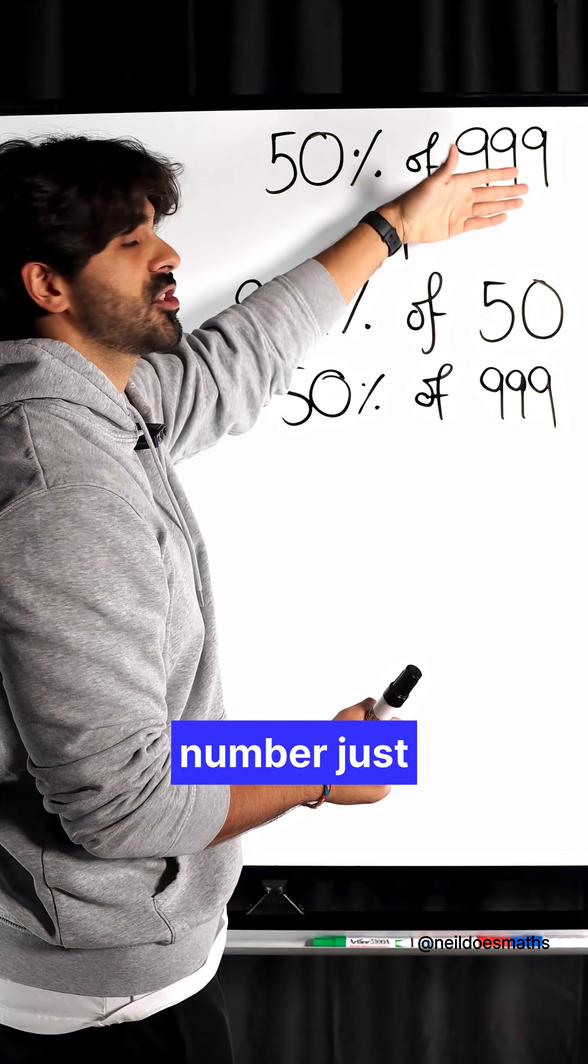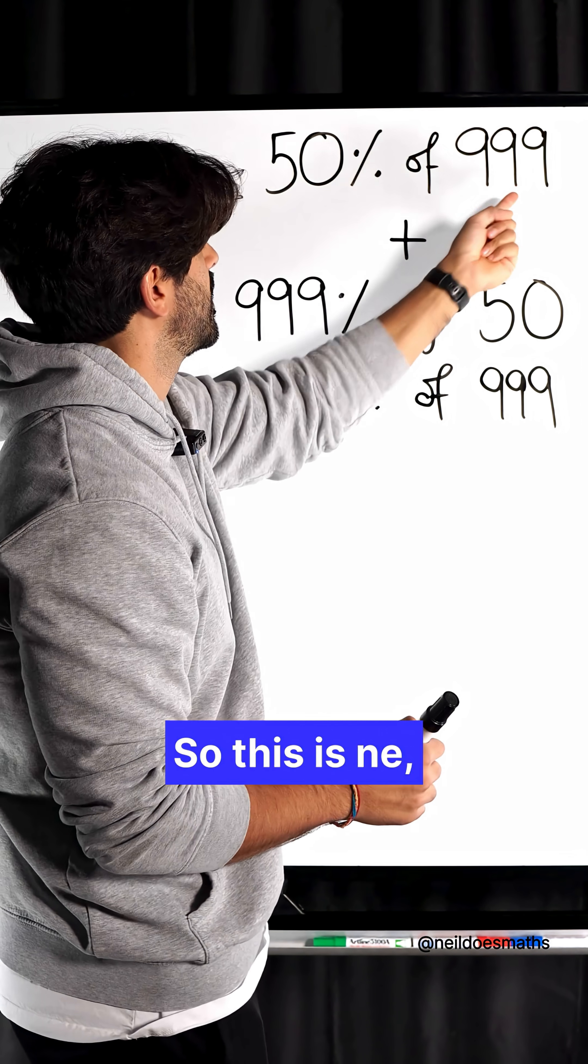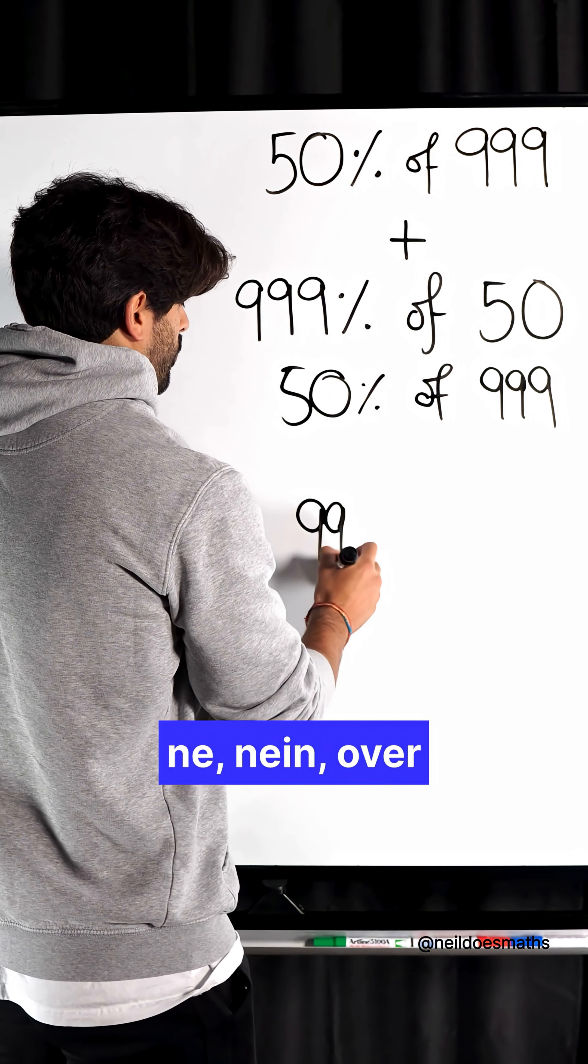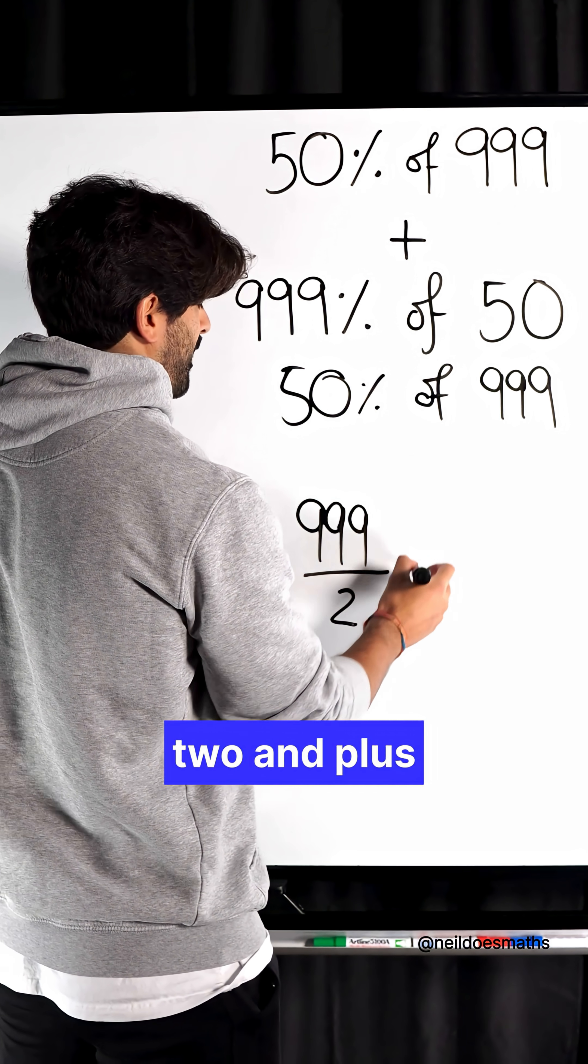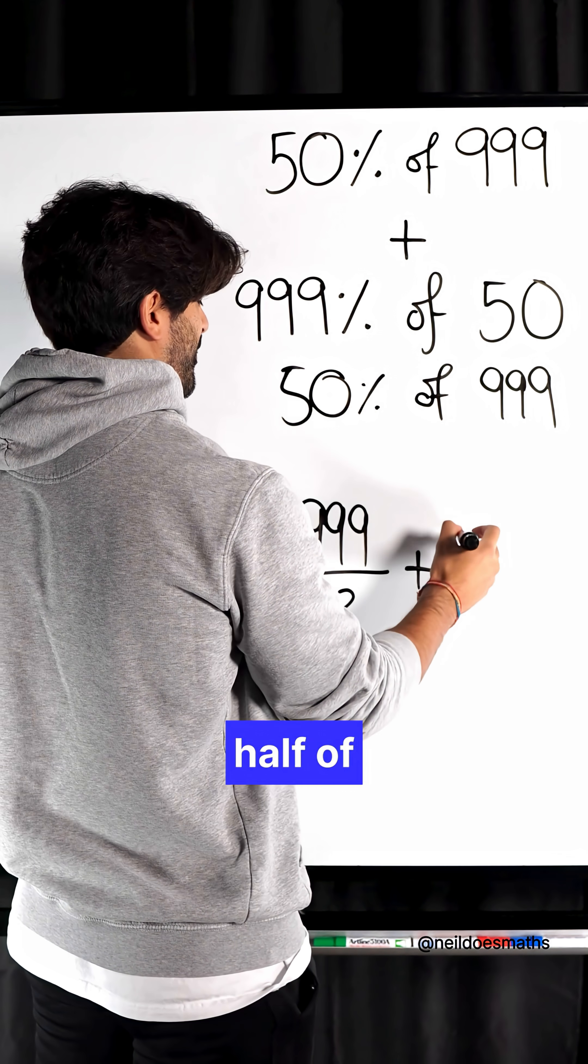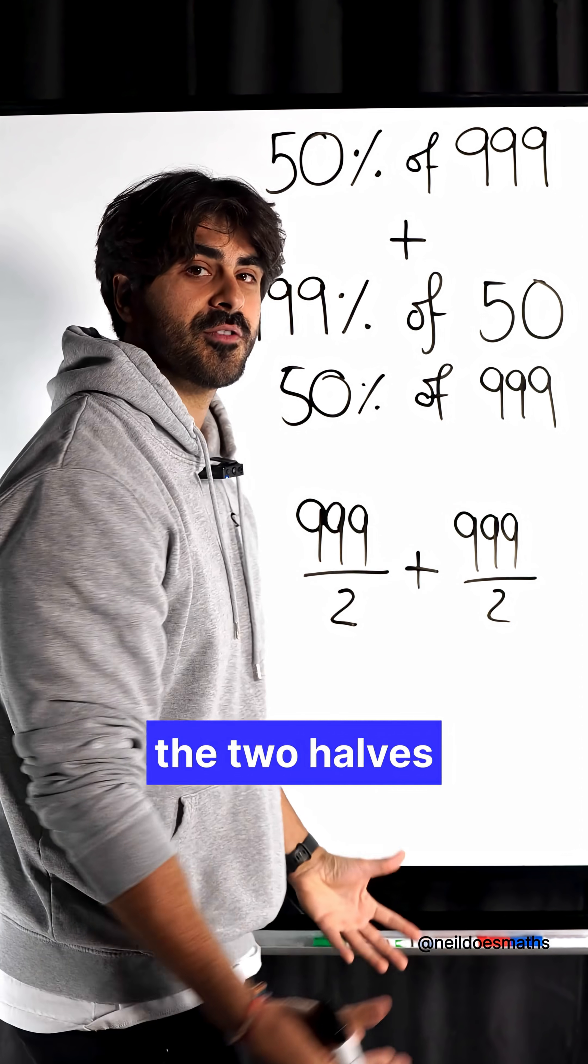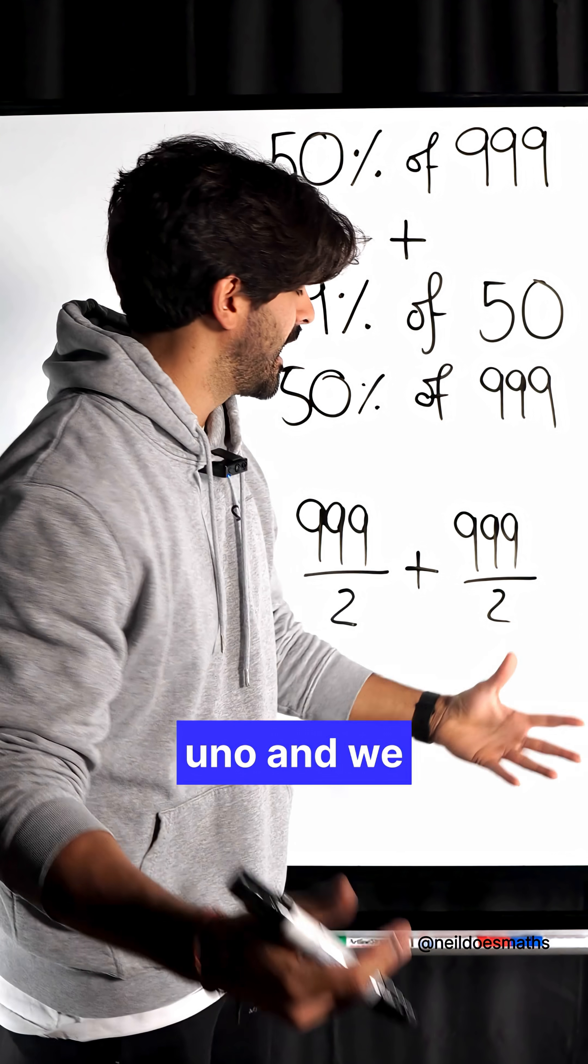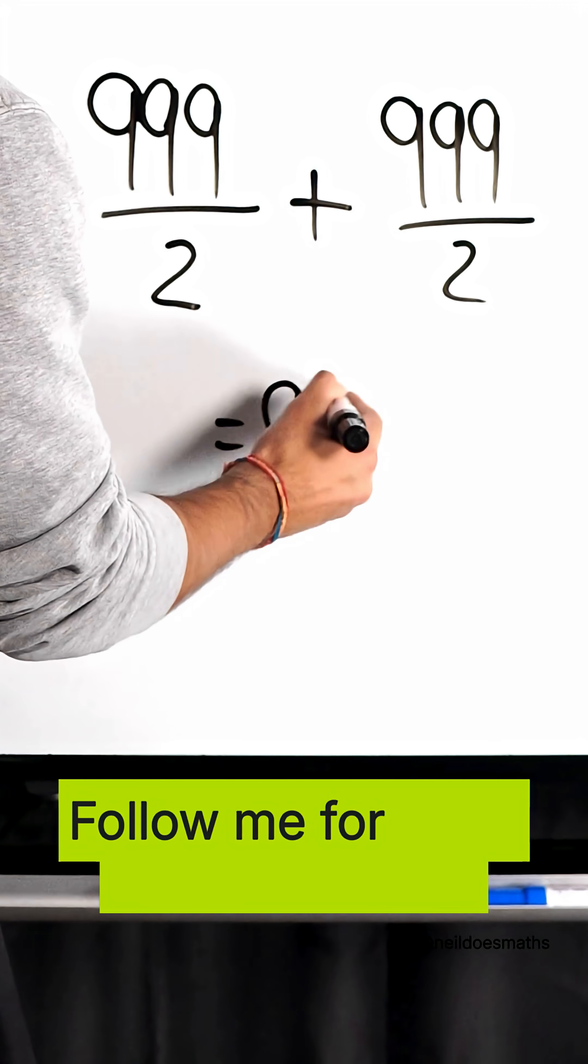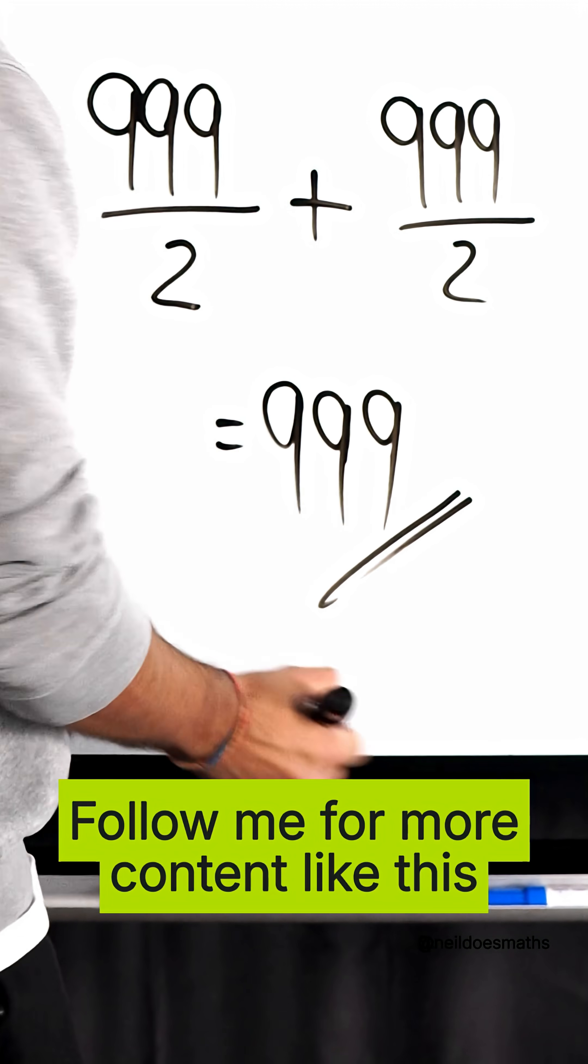50% of this number just means to half it. So this is 999 over 2 plus another half of 999. And when you add them together, the two halves join to become uno, and we are left with 999.